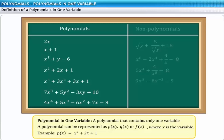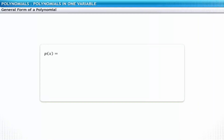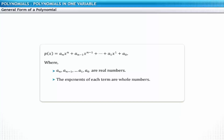For example, p of x is equal to x squared plus 2x plus 1. The general form of a polynomial in one variable is a_n times x to the power of n plus a_(n-1) times x to the power of n minus 1, and so on, down to a_0, where a_n, a_(n-1), and so on down to a_0 are real numbers, the exponents are whole numbers, and n, the highest exponent, is the degree of the polynomial where a_n is not equal to 0.